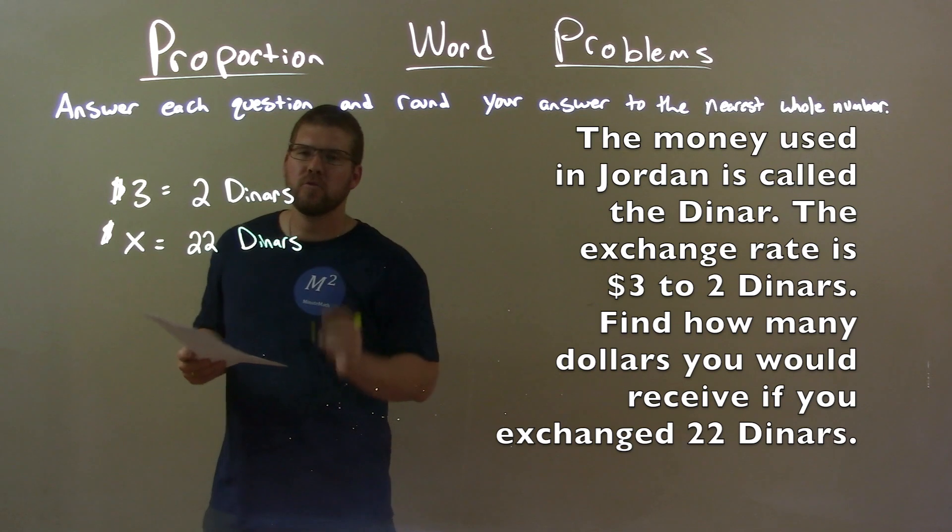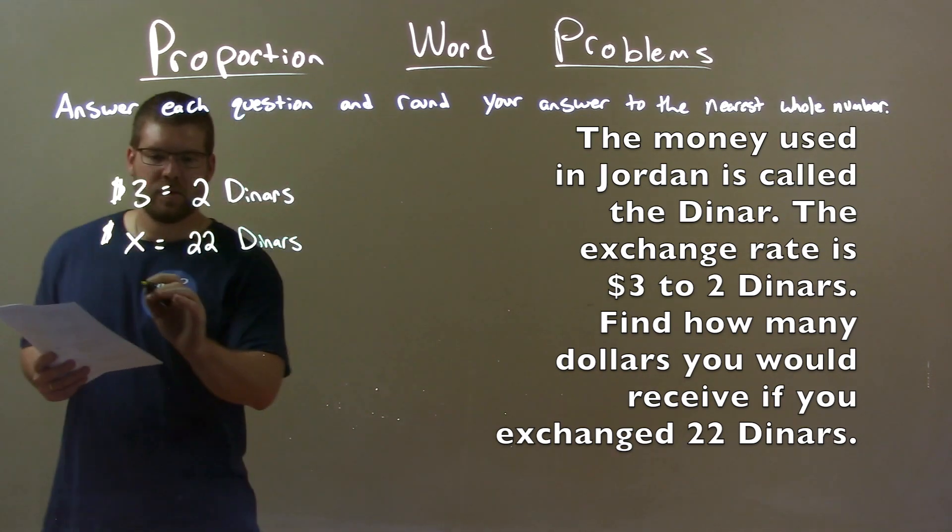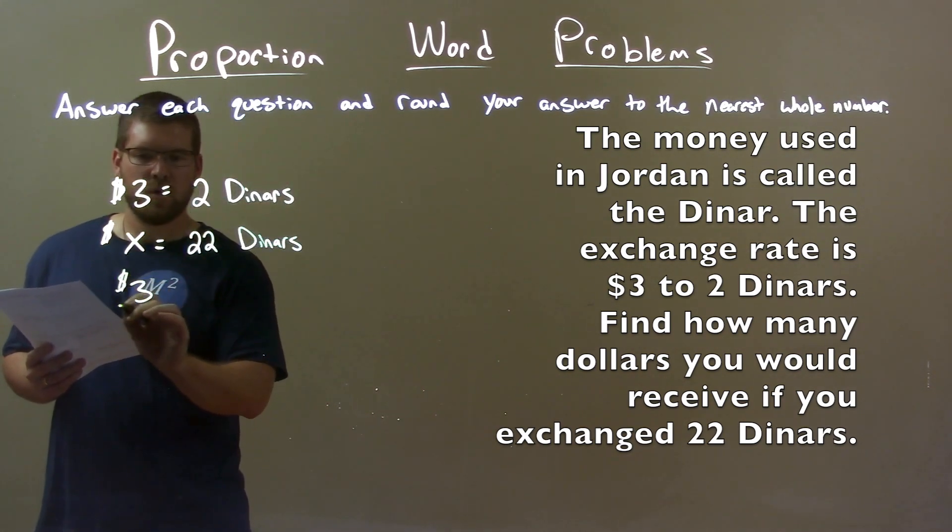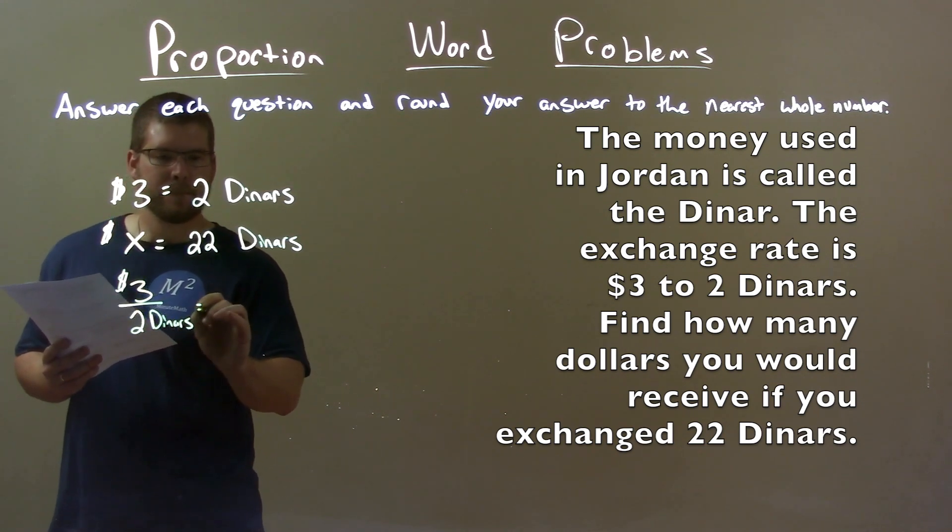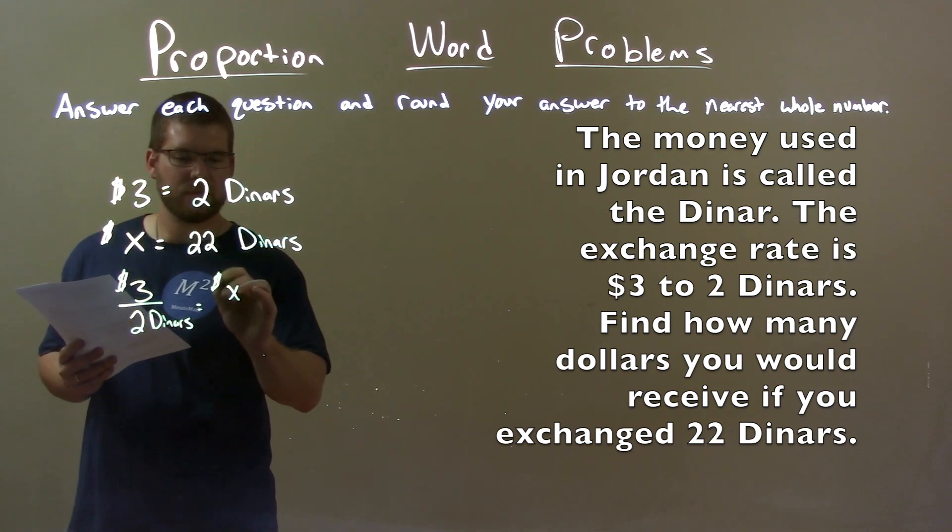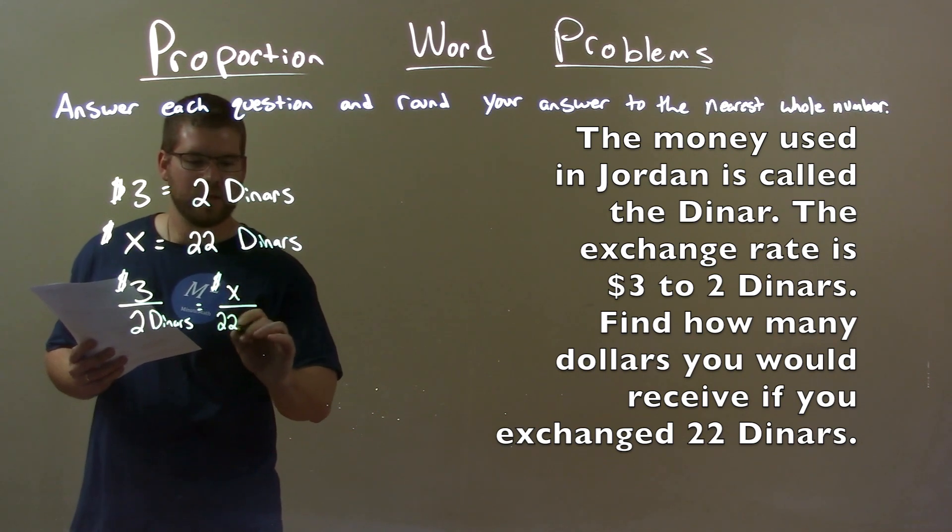Alright, so let's go set up a proportion. Three dollars over two dinars equals x dollars over 22 dinars.